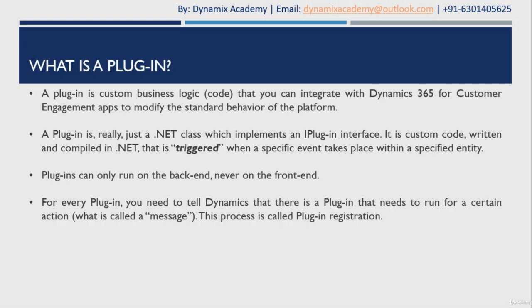For every plugin, you need to tell the Dynamics platform on which action — called a message in plugin terms — the plugin needs to run. You need to define on which message the plugin will be triggered. The message can be creating a record, updating a record, or deleting a record. Dynamics 365 has a large set of messages on which you can trigger a plugin.